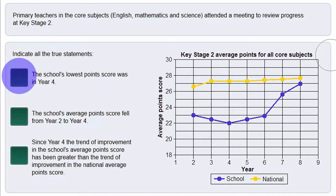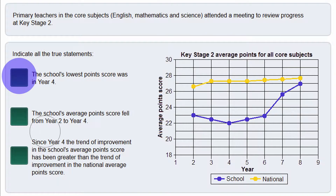Now let's have a look at the second statement. This claims that the school's average points score fell from year 2 to year 4. We are looking at the school so we need to look at the blue line. From year 2 we were at 25 and at year 4 it dropped to 22. So this did fall and this statement therefore is true.